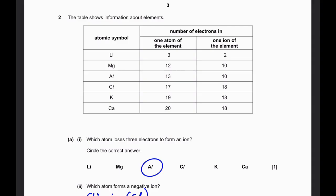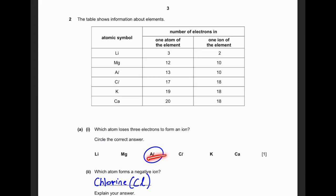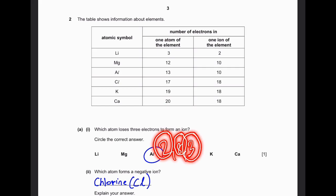Question 2. The table shows information about elements. Which atom loses three electrons to form an ion? Circle the correct answer. The answer is aluminium, because the electronic structure is 2, 8, 3. So in the first shell there are two electrons, the second shell has eight electrons, and the third shell has three electrons. To form an ion, it has to lose these three electrons, and it'll have an octet structure.